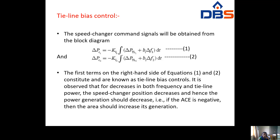Next, tie-line bias control: the speed changer command signal is obtained from the block diagram as delta PC1 equals minus KI1 times the integral of (delta PTL1 plus B1 times delta F1) dt, and delta PC2 equals minus KI2 times the integral of (delta PTL2 plus B2 times delta F2) dt (equation 2). The first terms on the right-hand side constitute tie-line bias control. For decreasing frequency and tie-line power, speed changer position decreases, reducing power generation; if the ACE is negative, the area should increase its generation.